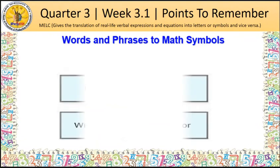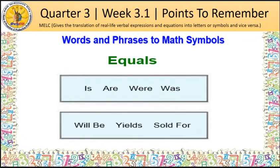For the equal sign, we have the words such as is, are, where, was, will be, yields, sold for.